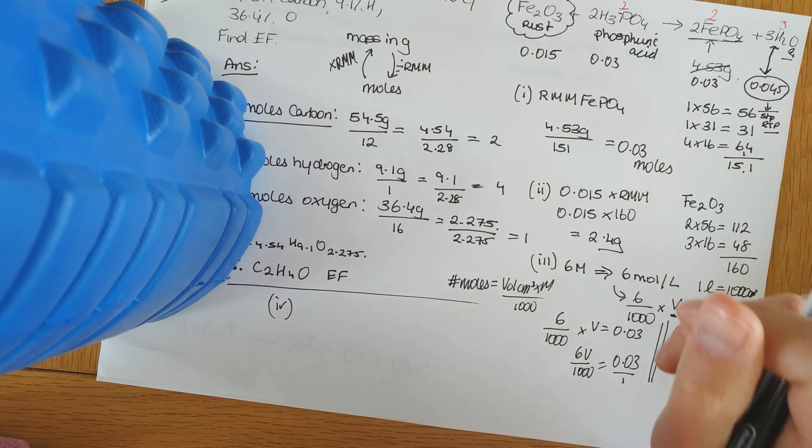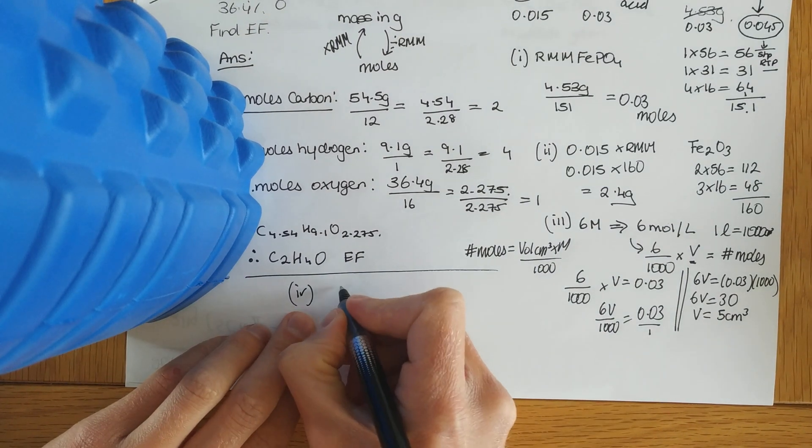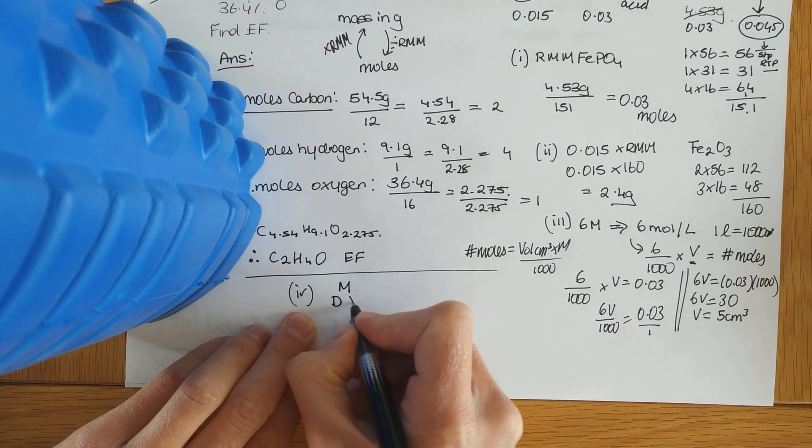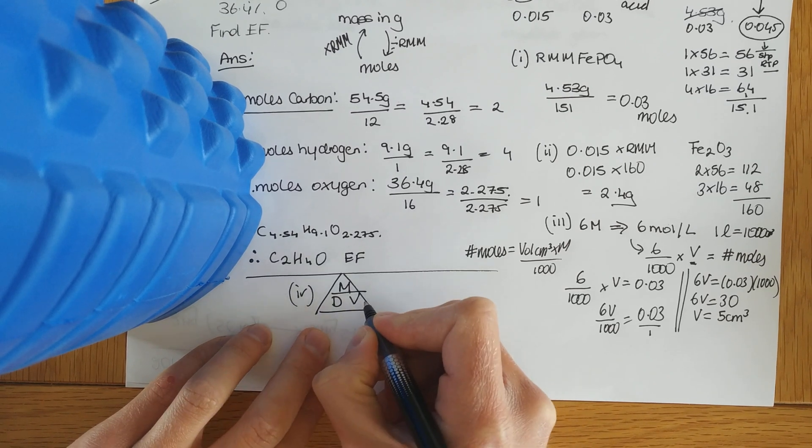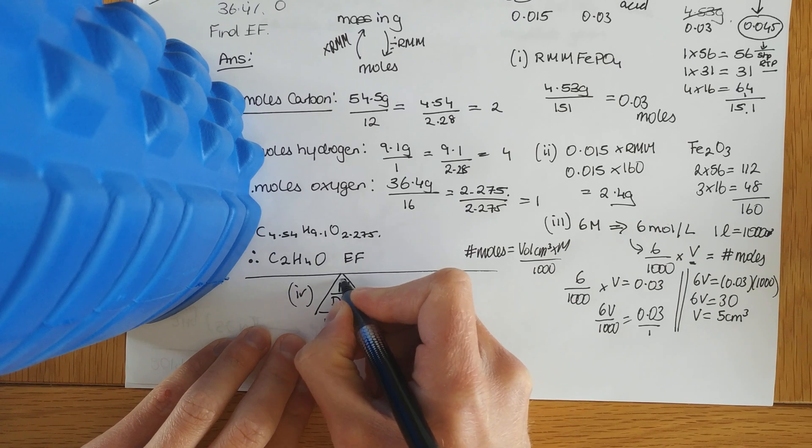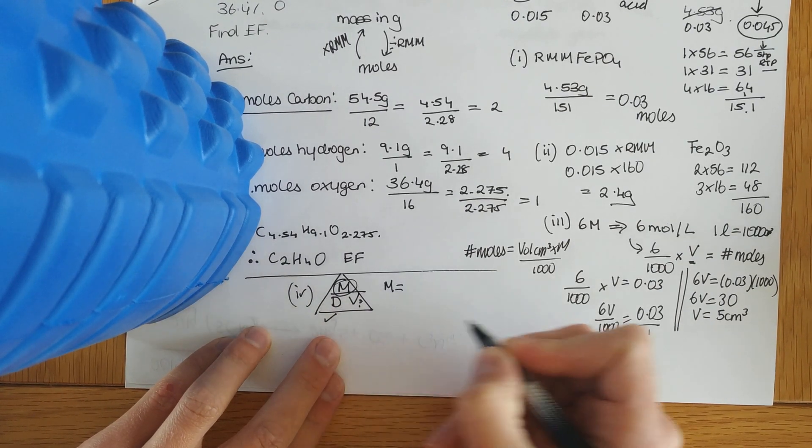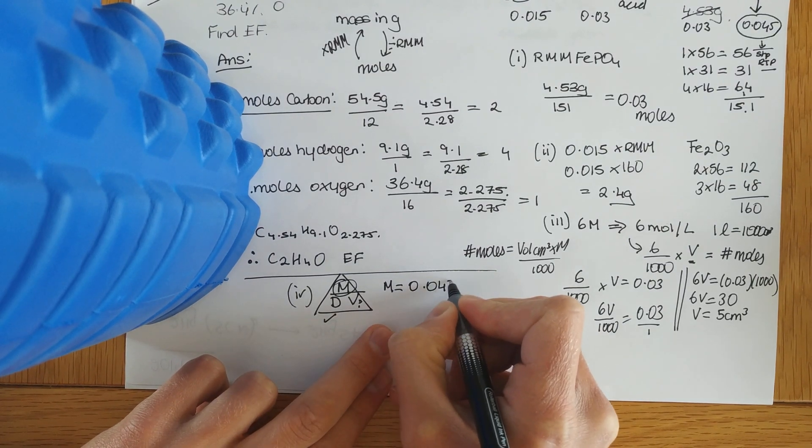But here, another real clue is that they give me the density. If they give me the density, and they've asked me for the volume, I'm thinking of this triangle here. Geese drink vodka, mass, density, volume. So they've given me the density, they've asked for this, so that means I must need the mass. Now, in order to work out the mass, I've got the number of moles of water, 0.045. Hopefully that's right now.